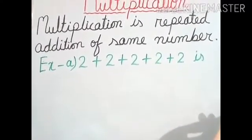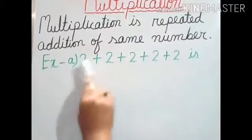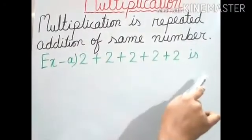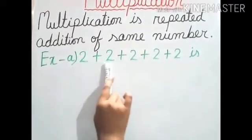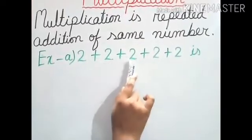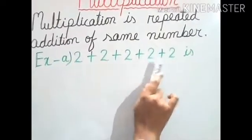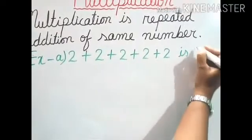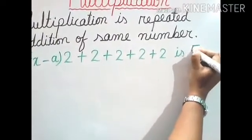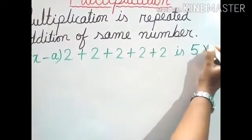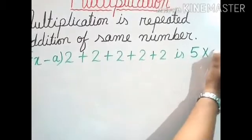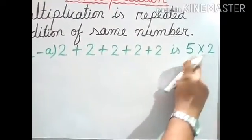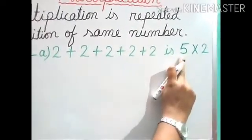So how to write it? First we will count: this digit 2 is written how many times? 1, 2, 3, 4, 5. So we can write it as 5 multiplied by 2, meaning 2 is written 5 times.